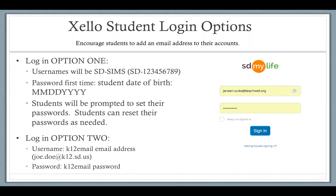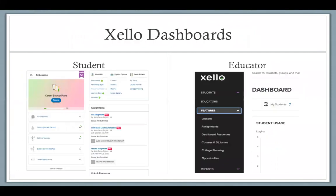It's important that regardless of whether you're using option one or option two for login, students go to the sdmylife.com website in order to have access. If you try to navigate through the Zello login website, they will not be able to use that K-12 configuration. On the student dashboard you're going to see college planning under Goals and Plans, and on the educator dashboard, college planning will appear under Features. I will be logging on live to show you, but just to give you a quick reminder of where that is.